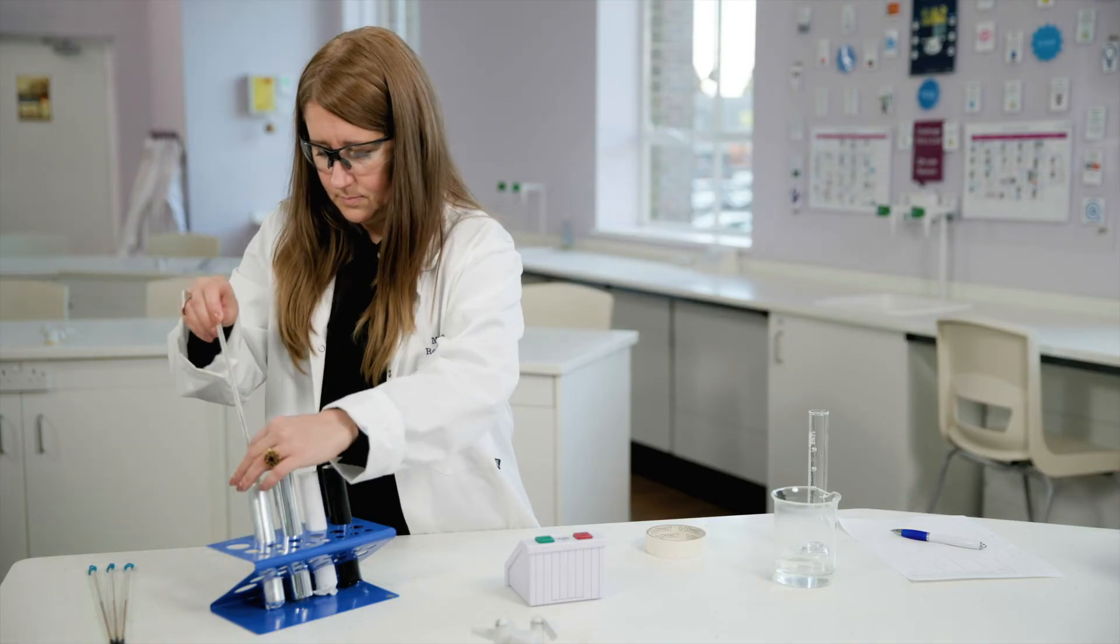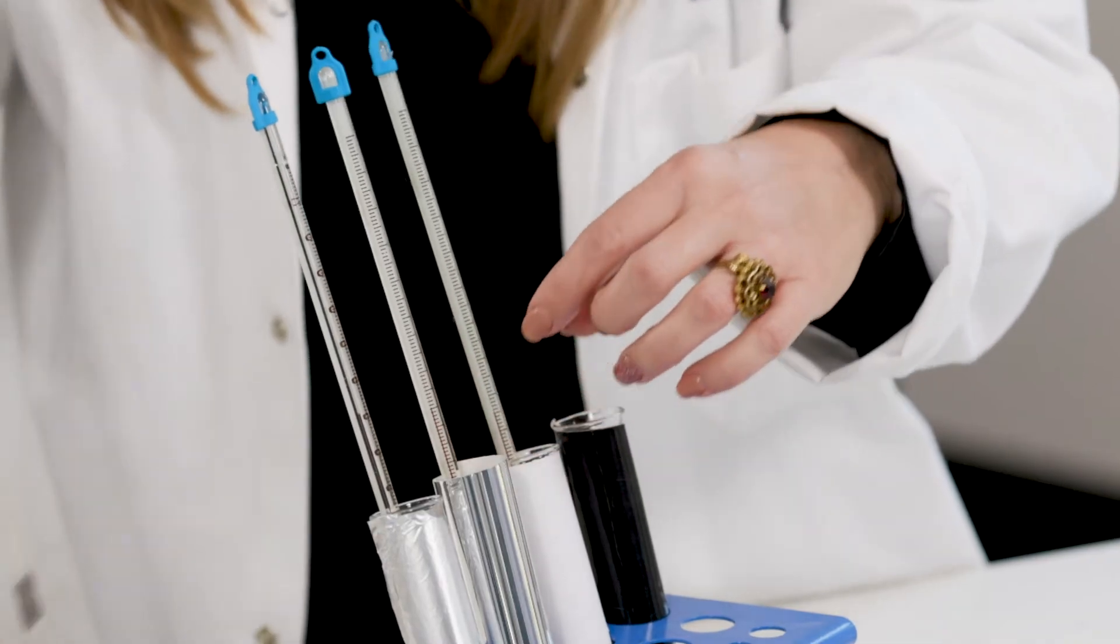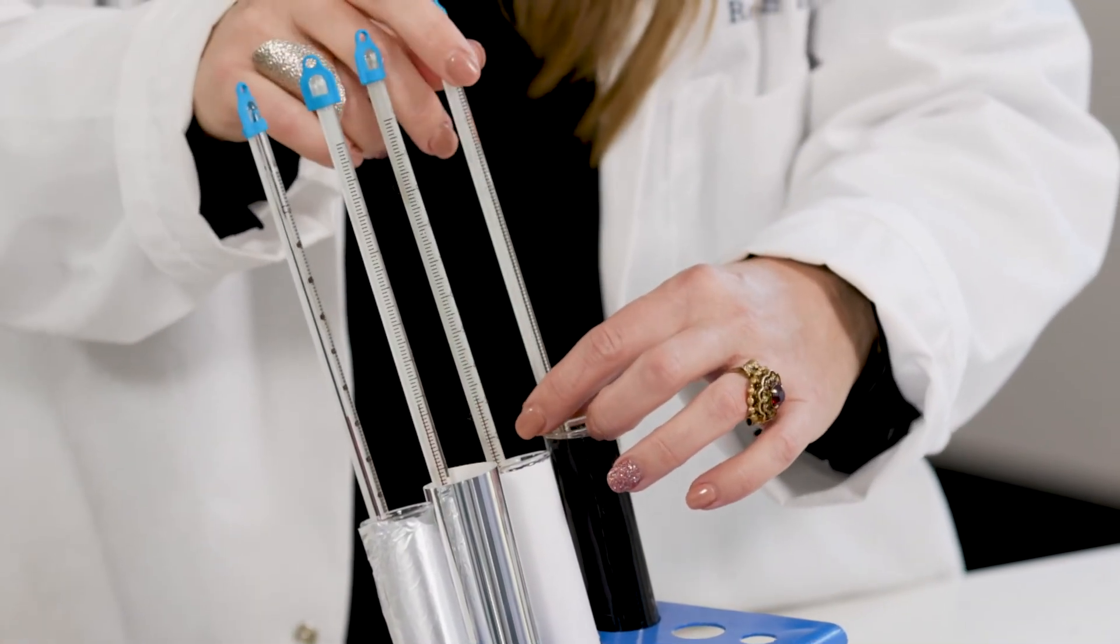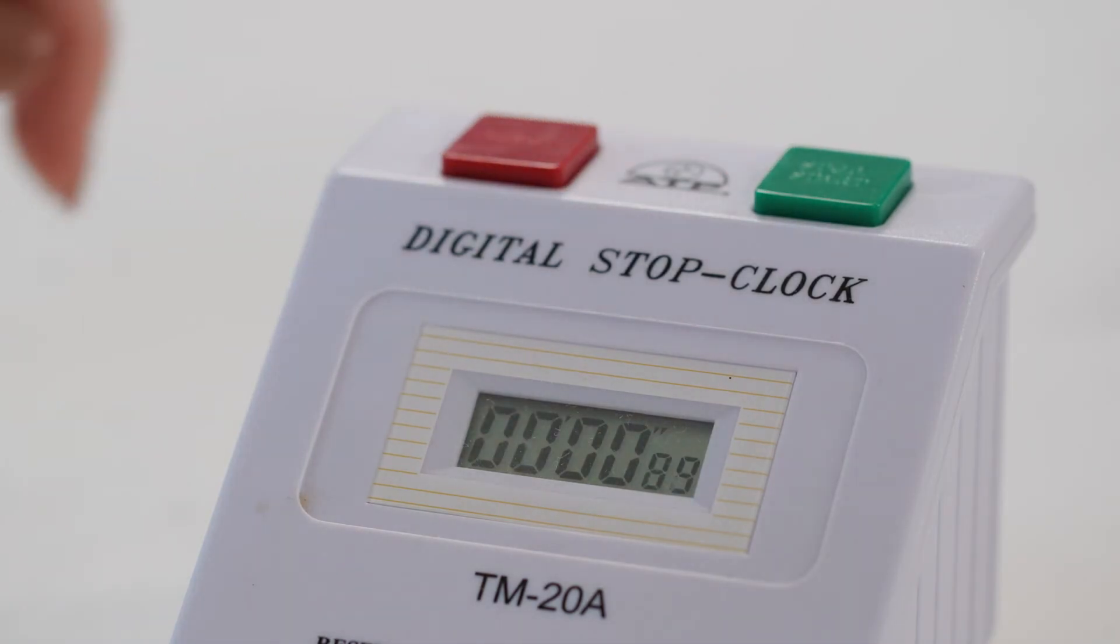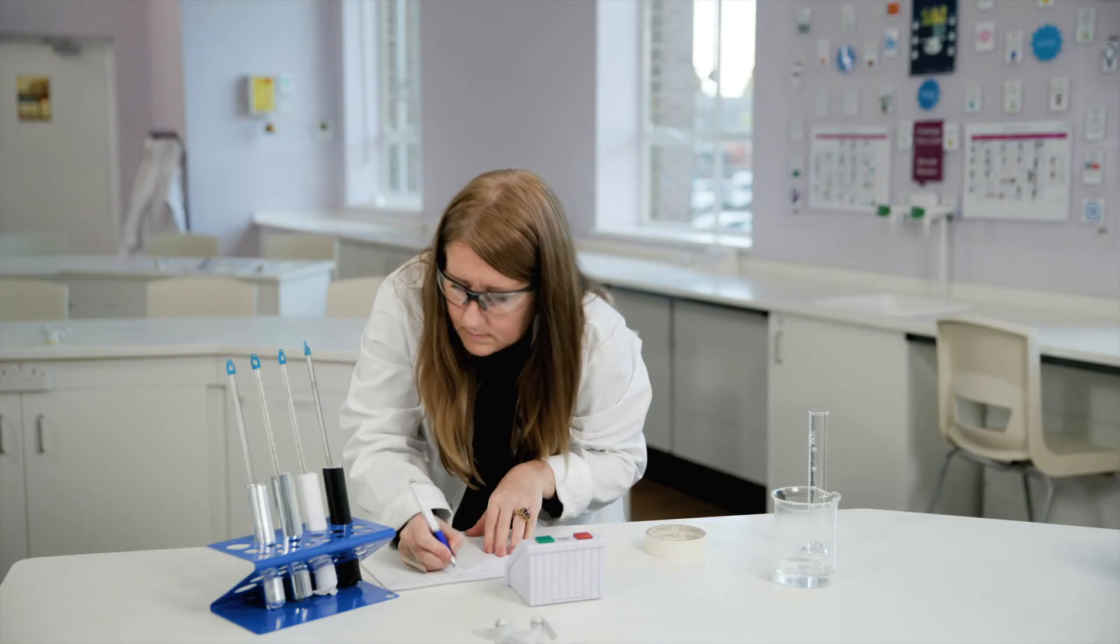Now insert the thermometer into the boiling tube. You will now need to record the temperature of each boiling tube and start the stop clock. Record these results in your table.